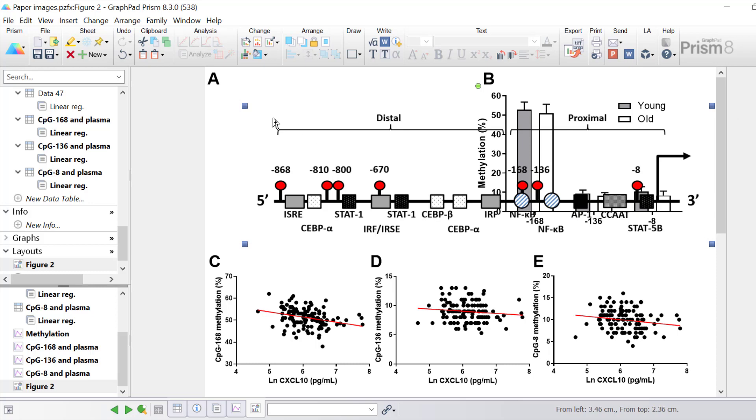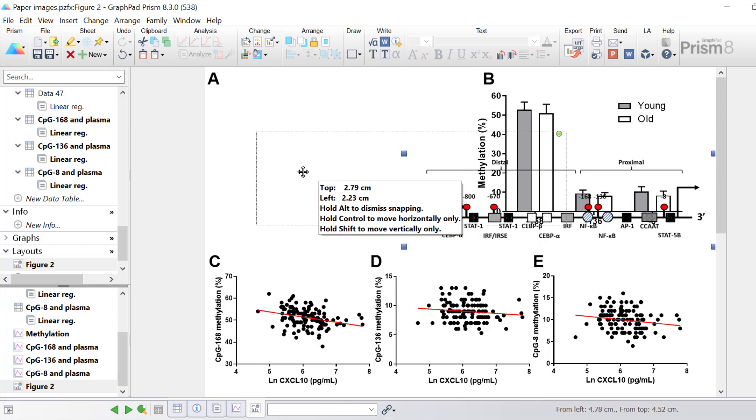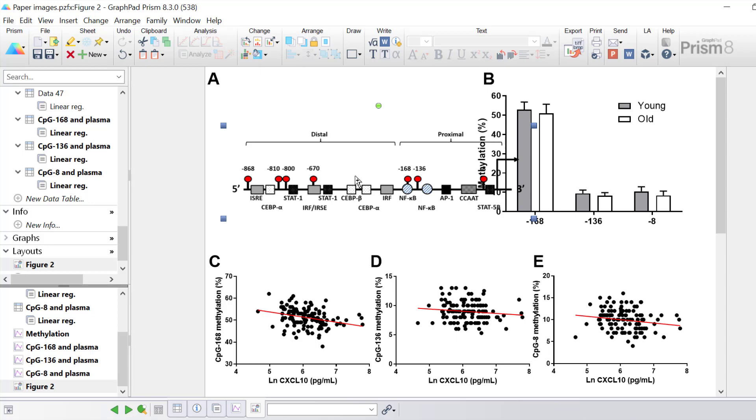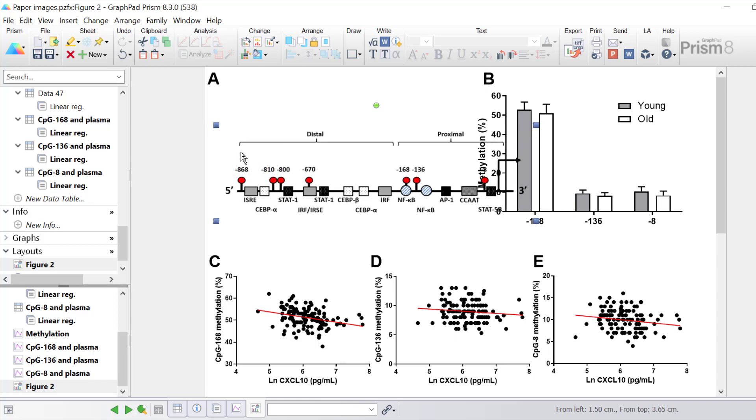You can click and drag on these squares to change the size of the image. For example I can make it smaller and I can click and drag to move the picture around on the layout page itself. Prism will keep the same image ratio on the picture therefore it won't distort the image.